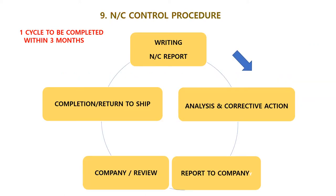Next is explaining Chapter 9 nonconformity control procedure. When a master and chief engineer identify a nonconformity on board — first step: write a nonconformity report. Step 2: Analyze the cause and take corrective action. Once analysis and corrective action are completed and verified as okay, you send this report to the company with evidence.